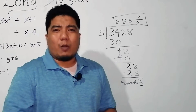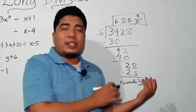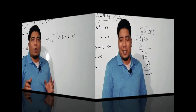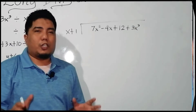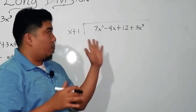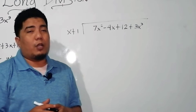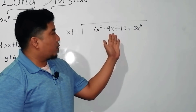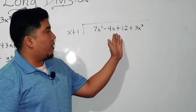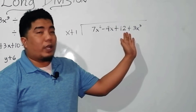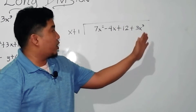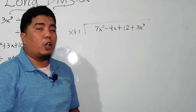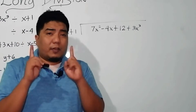Now let's apply that concept to our polynomials. We are here in our first example, which is 7x squared minus 4x plus 12 plus 3x cubed, divided by x plus 1.